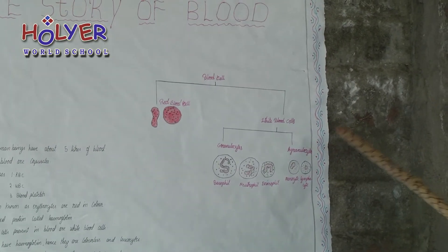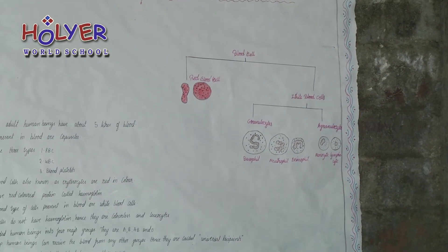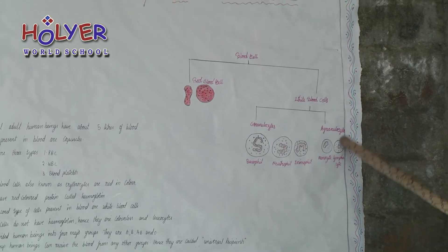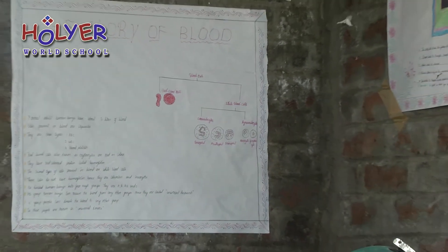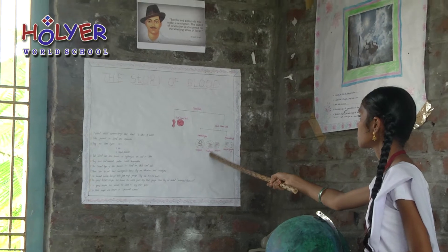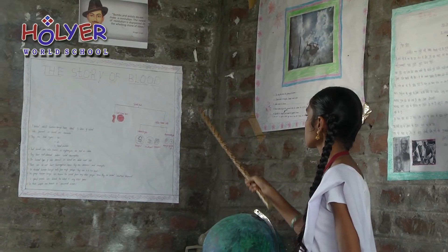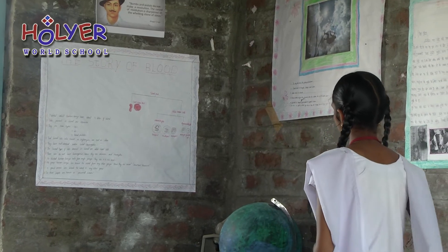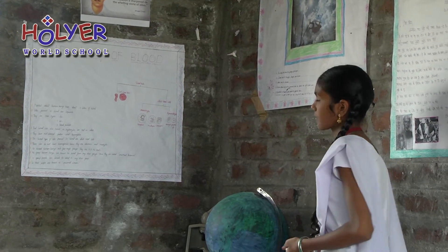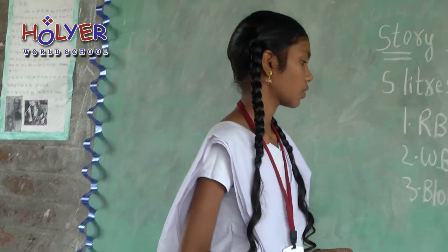These are white blood cells. The white blood cells are 2 types: granulocytes and agranulocytes. Granulocytes are 3 types: basophils, neutrophils, and eosinophils. Agranulocytes are 2 types: monocytes and lymphocytes. They do not have hemoglobin and are also called leucocytes.